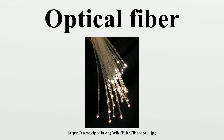Each fiber can carry many independent channels, each using a different wavelength of light. The net data rate per fiber is the per-channel data rate reduced by the FEC overhead, multiplied by the number of channels. As of 2011, the record for bandwidth on a single core was 101 Tbit/s. The record for a multi-core fiber as of January 2013 was 1.05 Pbit/s. In 2009, Bell Labs broke the 100 petabit×km/s barrier.